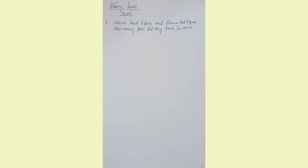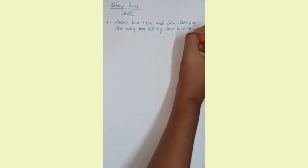Let us see what is the first question. Meena had three pens and Sima had five pens. Find how many pens did they have in total.